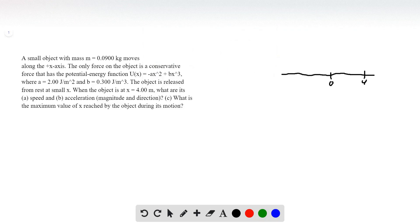Problem 7.74. We have a small object with mass of 0.09 kg, and it moves along the positive x-axis. The only force acting on it is a conservative force with potential energy function negative A x squared plus B x cubed, where we have alpha and B defined here.